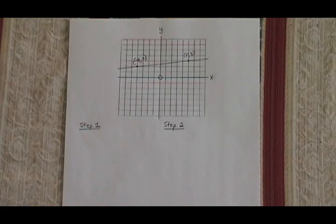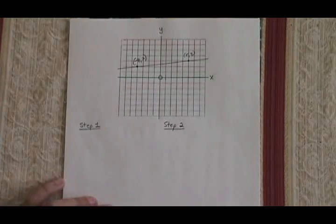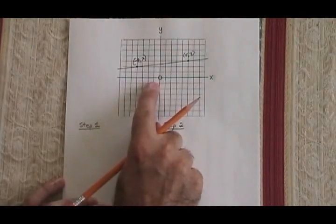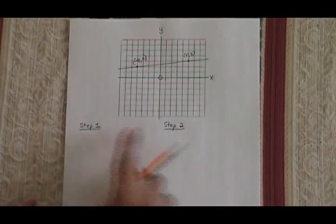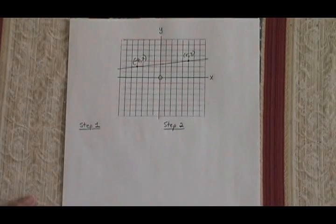To find the equation of a straight line when we are given a graph that shows us some information about the line, there is a step 1 and a step 2 in the process you need to use.